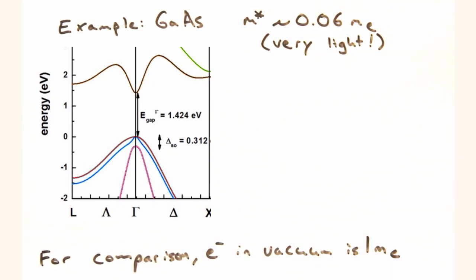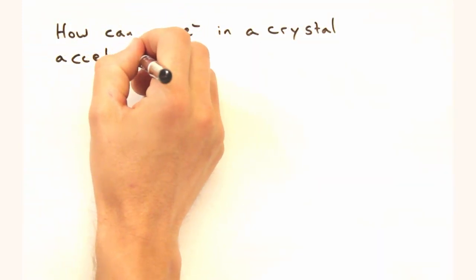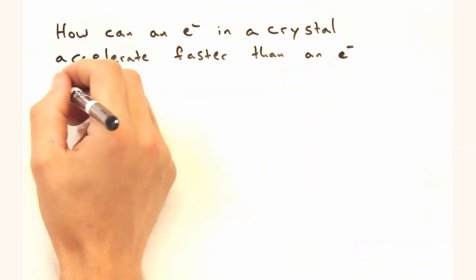If we fit a parabola to the band edge of Gallium-Arsenide, we get an effective mass of about 0.06 times the mass of the electron. That's crazy low. It sure is. And it kind of begs the question, how can it be true?